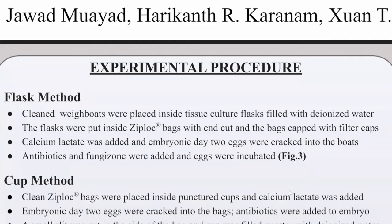The first of the two main methods that we are using is known as the flask method. We first sterilize all the materials with chlorhexidine and then dry them with gauze. Then we place the weigh boat inside the flask and secure a plastic bag through the pre-cut hole in the corner with a filter cap. We add 0.3 grams of calcium lactate and 3 milliliters of milliQ water, and crack a day-2 egg into the weigh boat under the PCR. Next we add 0.06 milliliters of fungizone and 0.6 milliliters of antibiotics, and fill the flask up to one-fourth of the way full with DI water. Lastly, the plastic bag is zipped and carefully placed in an incubator for further observation.